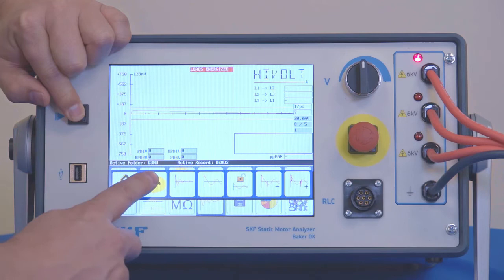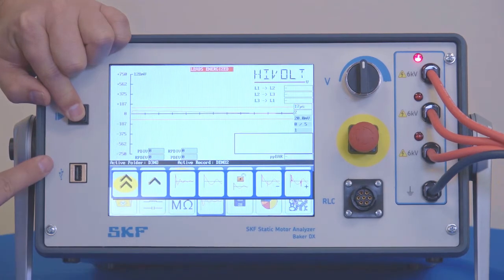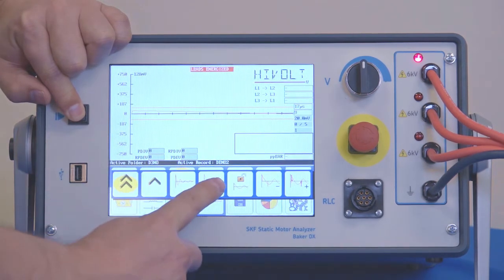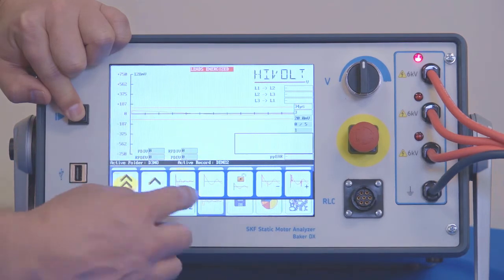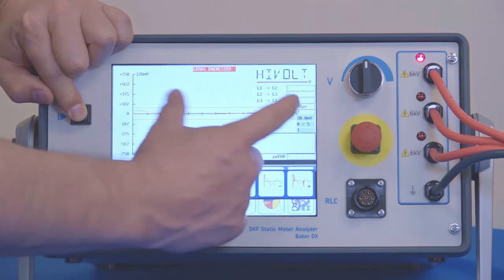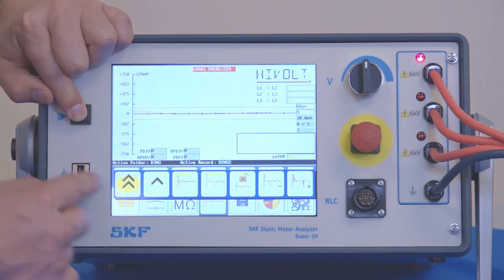You have your slow ramp and fast ramp. I'm going to select the fast ramp. Then you have these range scale settings similar to the normal surge test and get those so that your waveform takes up the screen.